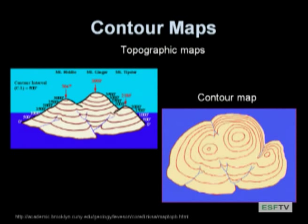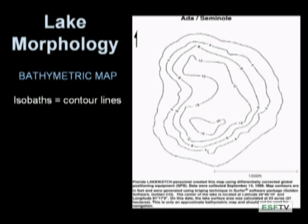Those maps are called bathymetric maps. 'Bathy' means deep, so it's a map of the depths of the lake. Just like a contour map, we have lines that show a constant depth — in this case instead of a constant altitude. Here you can see a little lake in Florida, and this is one of the isobaths — the lines of equal depth. If you dove down in this lake and went to a spot on this line, you would find the same depth at every point along it.